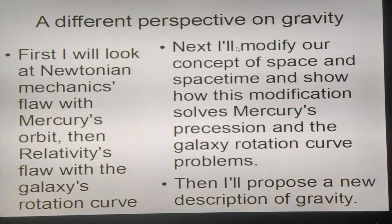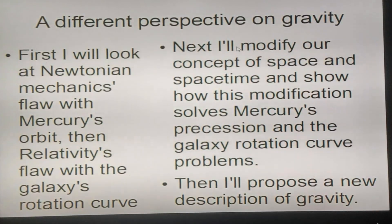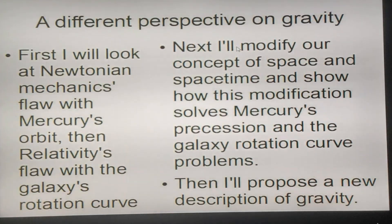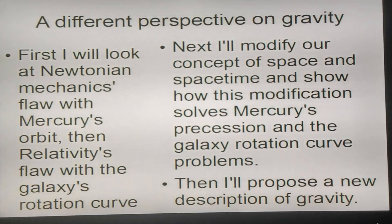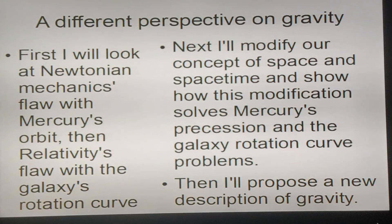I'm going to have a different perspective on gravity. First, I will look at Newtonian mechanics' flaw with Mercury's orbit, and then we'll look at relativity's flaw with the galaxy rotation curve. Next, I'll modify our concept of space and spacetime and show how this modification solves Mercury's precession and the galaxy rotation curve problems. Then I'll propose a new, physical description of gravity.